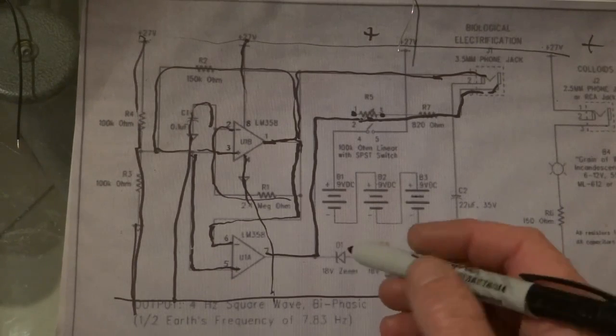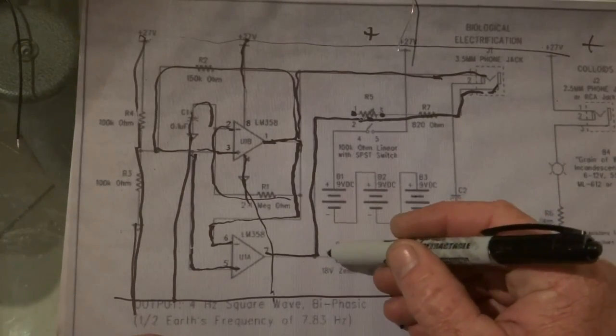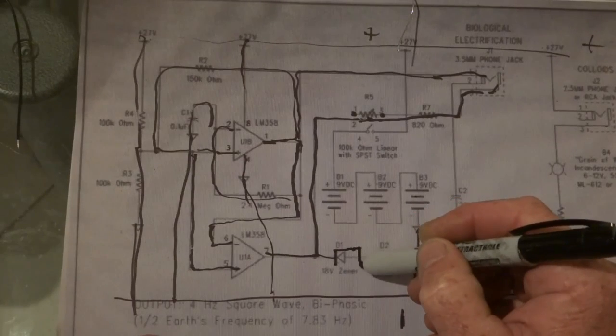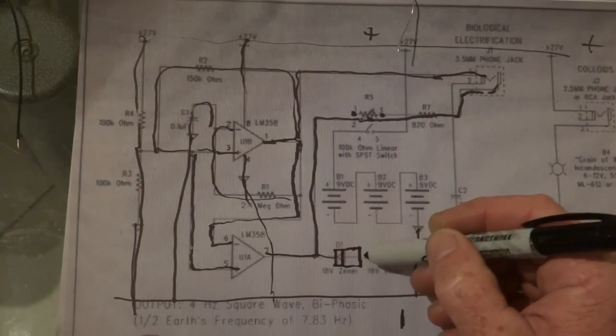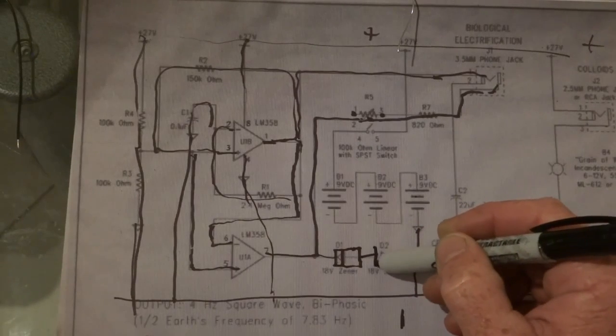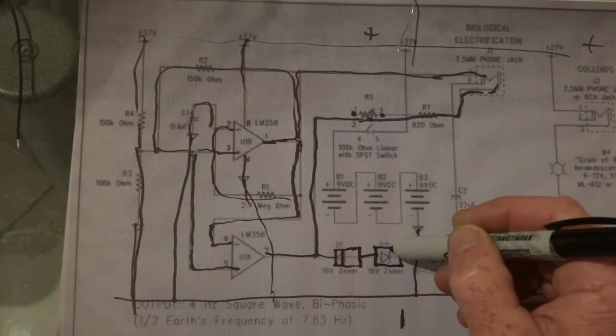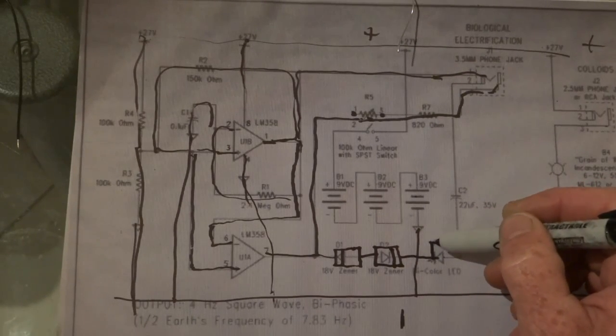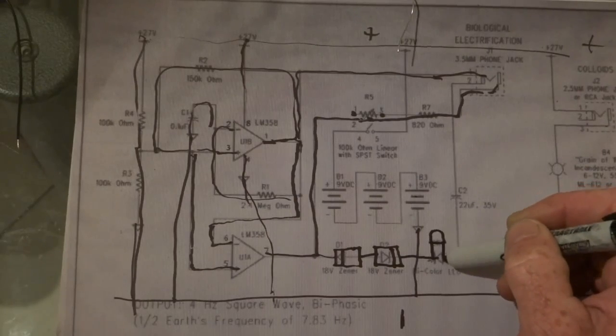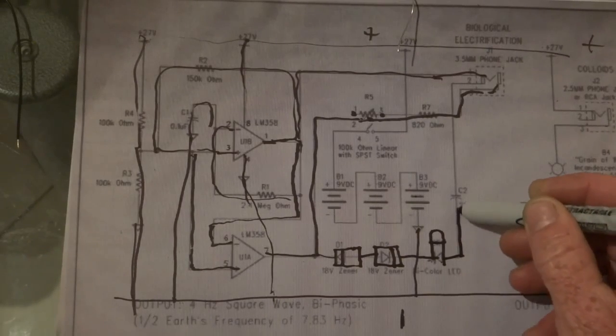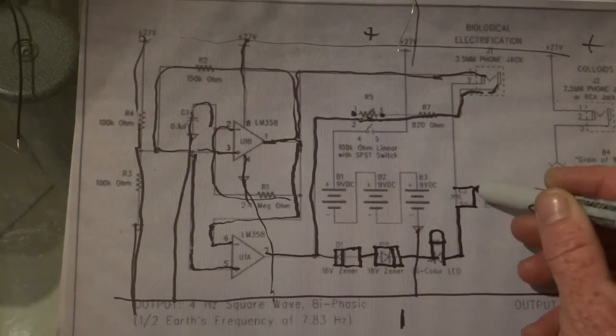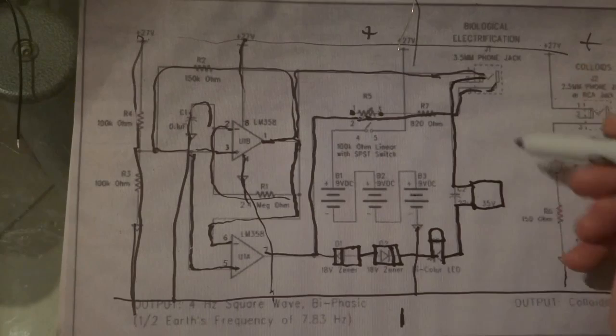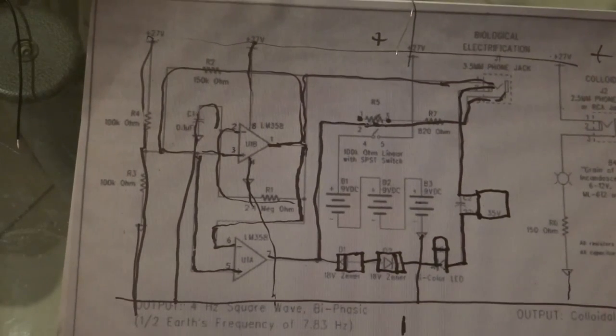And then this bottom section, we have the diode goes that way. The diode goes that way, and we have our lamp, our capacitor, and that goes to the other plug. That's basically the whole setup.